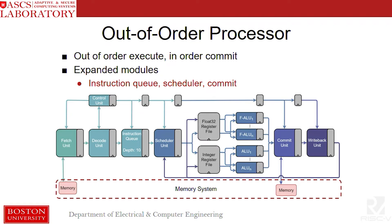The final processor of the set is our small out-of-order processor. It's out-of-order execute with in-order commit. It expands modules from before — we've added an instruction queue, a scheduler, and a commit module that's parameterized to make it easy to swap out register files. If you want to do an ISA extension, the idea was to make it as easy as possible.